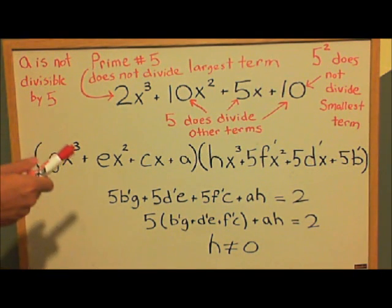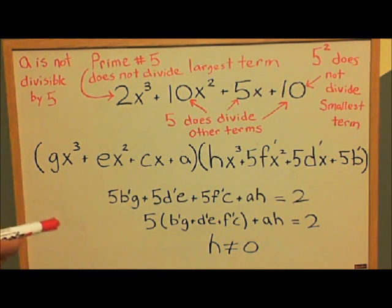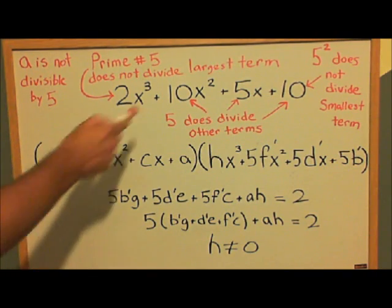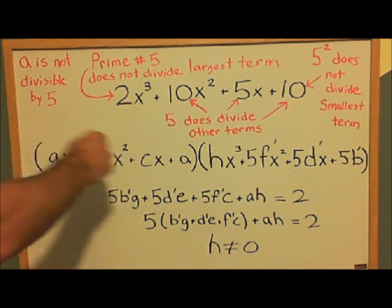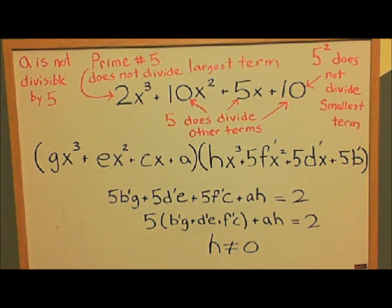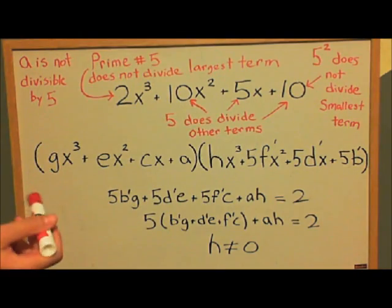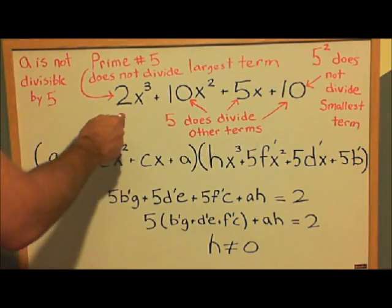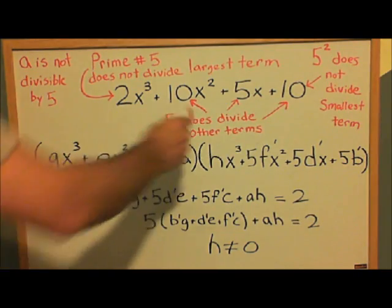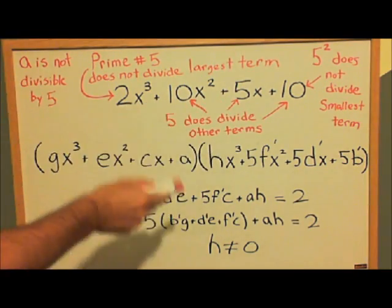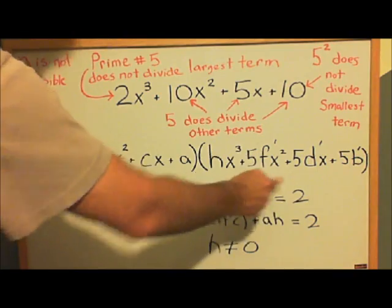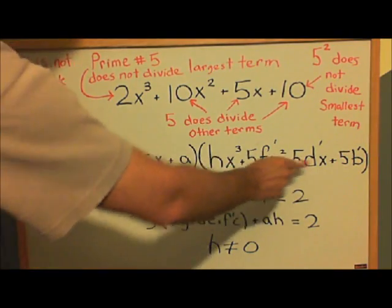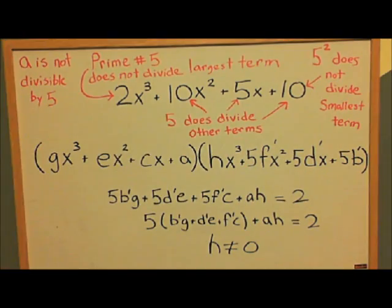I've shown the proof for a particular polynomial, but you can see that if we had a different prime number and a different set of coefficients that met all of these criteria, the proof would work the same way. The first and last steps would be the same, and then however many intermediate terms you have, you would just get 5s here—or whatever your prime number was—for however many terms there are in the middle.